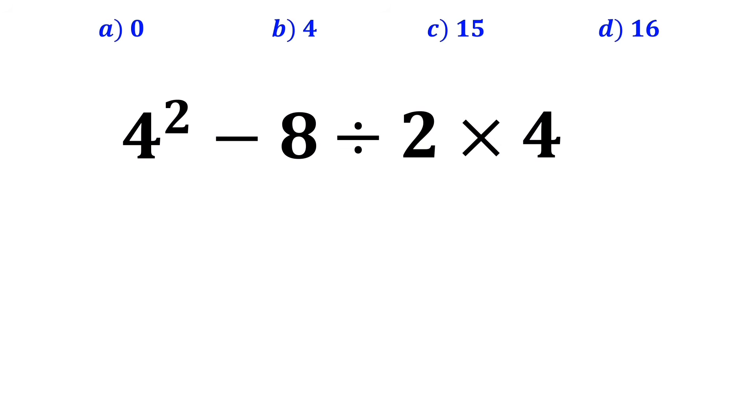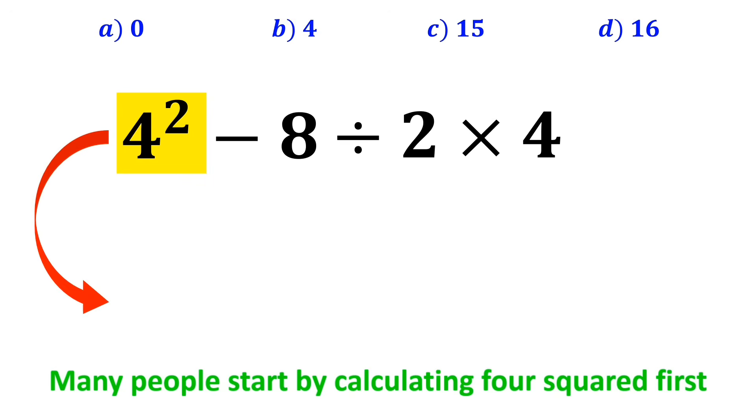To solve this problem, many people start by calculating 4 squared first, and instead of the original expression, they rewrite it as 16 minus 8 divided by 2 times 4.